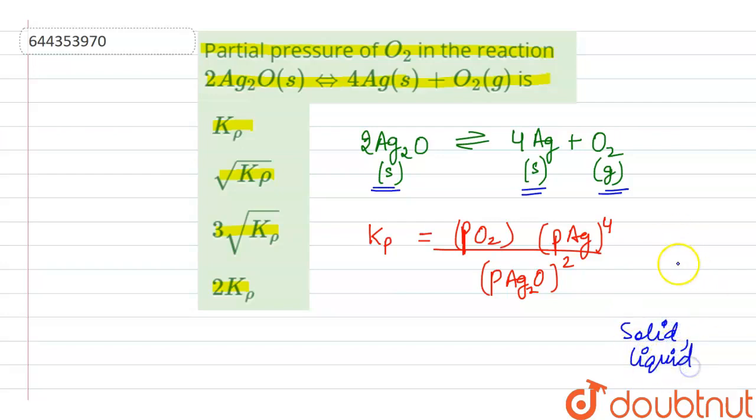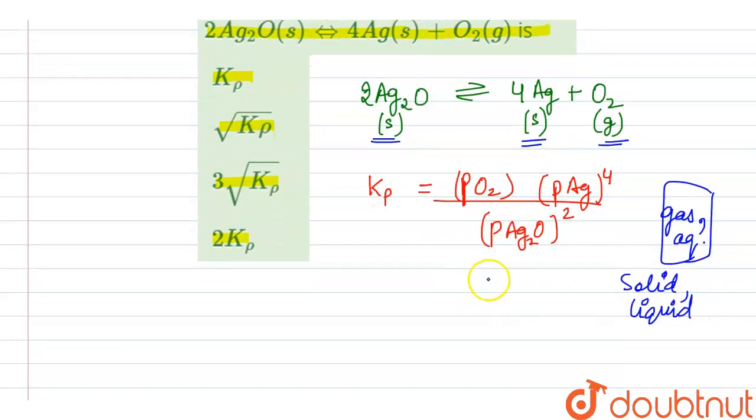But if we talk about the gaseous and aqua state, we consider the terms for the equilibrium constant. So here we see that this term and this term is in solid state, so we'll neglect these both terms. So we are left with Kp equals partial pressure of oxygen only.